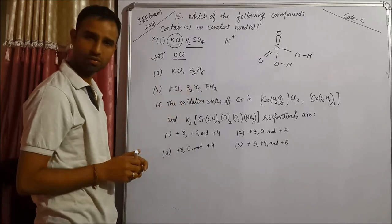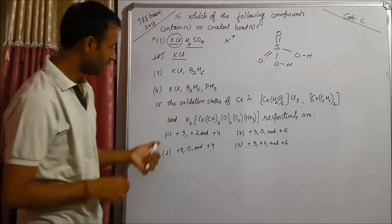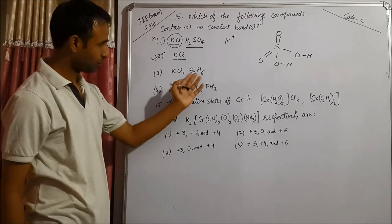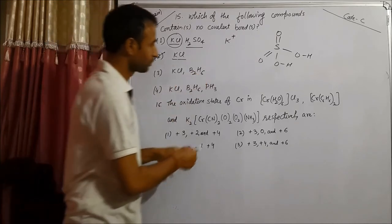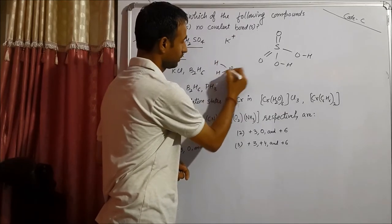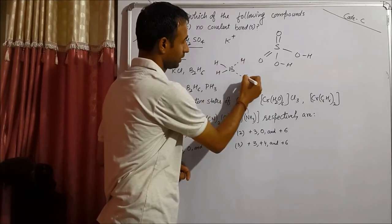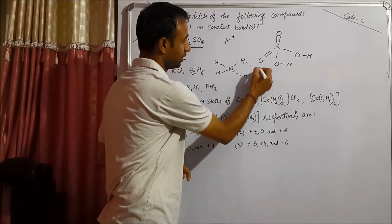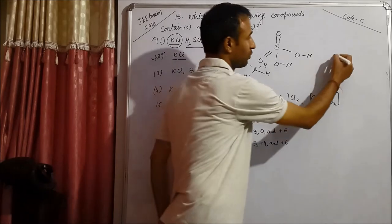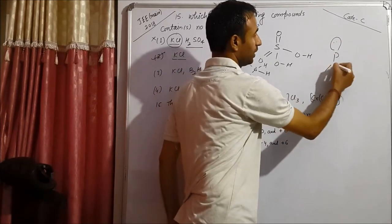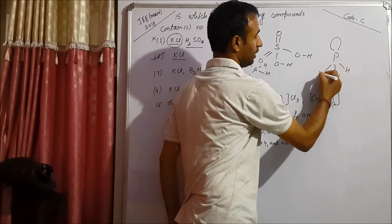No need to see other options. B2H6 has covalent bond, it has banana bond, three center two electron bonds and terminal bonds. NH3, very well known compound, one lone pair, three bonds.